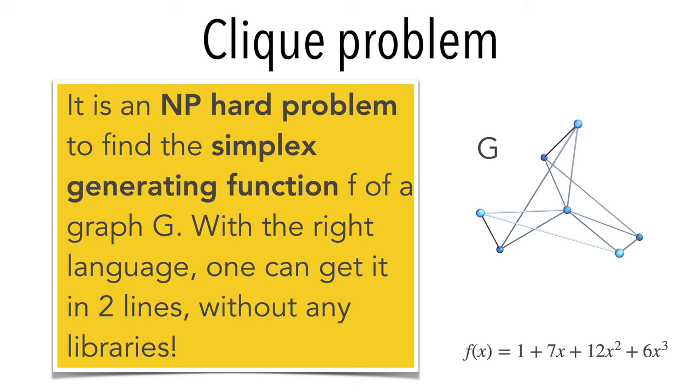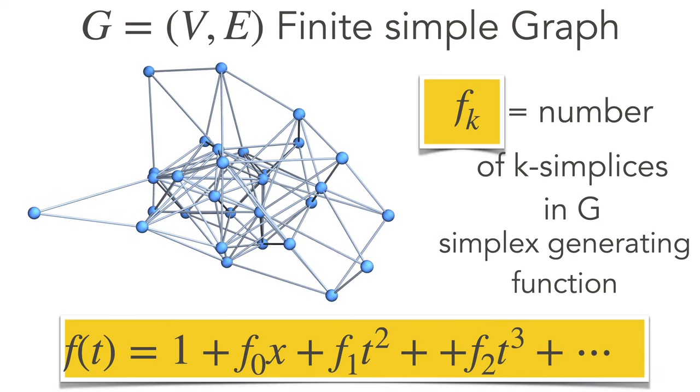Let me illustrate this with an example. The clique problem in graph theory is a famous NP-complete problem. The problem is to find the largest clique, a complete subgraph in a network. The more general problem to count the number of all cliques is difficult. The simplex generating function contains all these numbers: f0, the number of vertices; f1, the number of edges; f3, the number of triangles, etc.